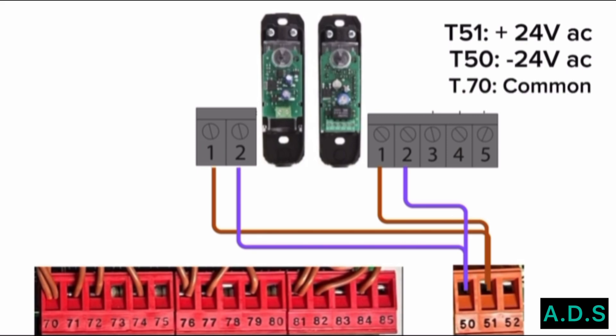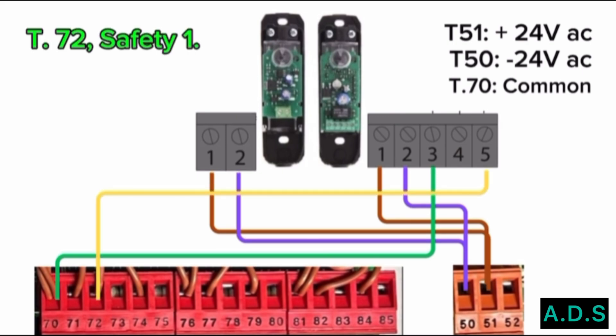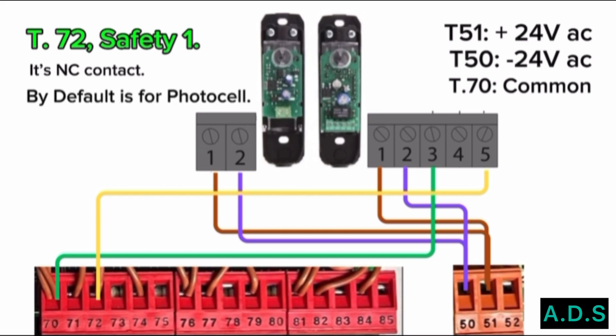Control board terminal 70 connects to RX relay pin 3. Terminal 70 is the common of the photocell. Control board terminal 72 connects to RX relay pin 5. Terminal 72 is Safety 1 — it is an NC contact. By default, it is configured for the photocell.